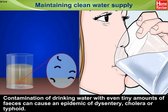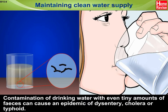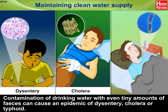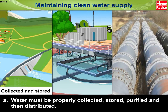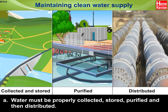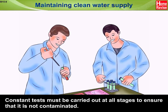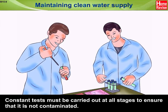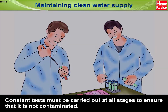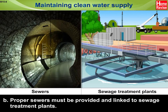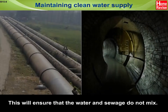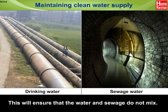Maintaining clean water supply: contamination of drinking water with even tiny amounts of feces can cause an epidemic of dysentery, cholera or typhoid. Water must be properly collected, stored, purified and then distributed. Constant tests must be carried out at all stages to ensure that it is not contaminated. Proper sewers must be provided and linked to sewage treatment plants to ensure that water and sewage do not mix.